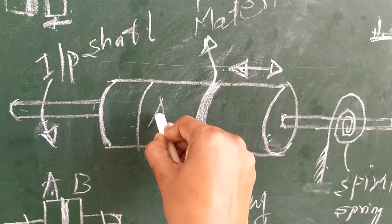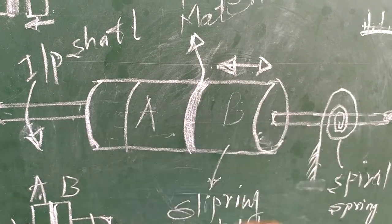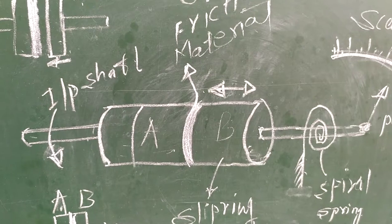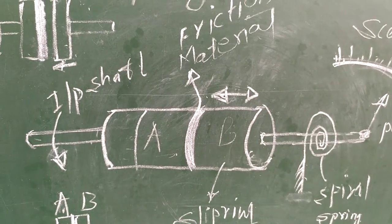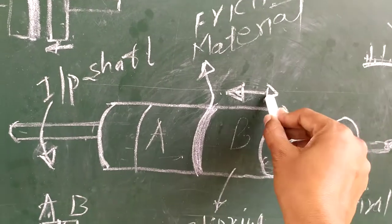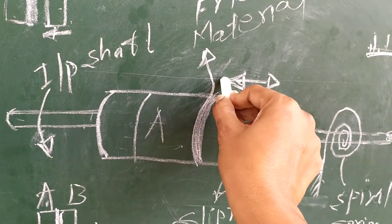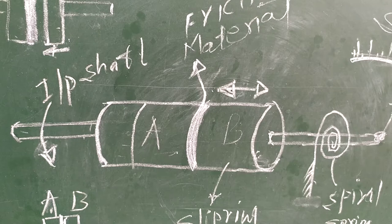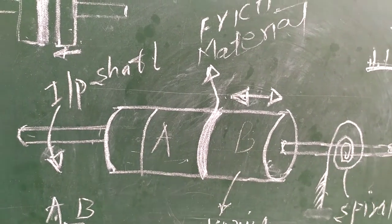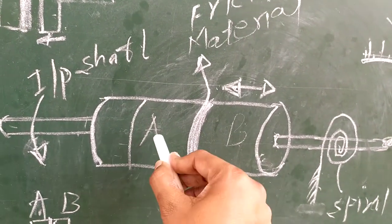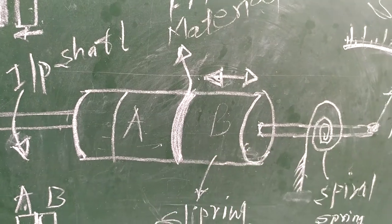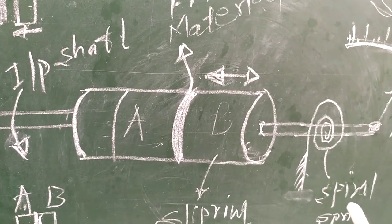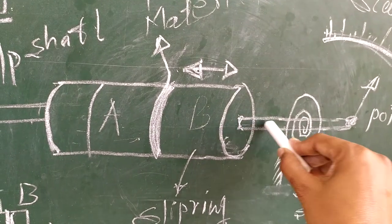This is the A disk and this is the B disk. A disk will be moving initially and B is at stationary. When we move this B disk towards the left hand side, it will gradually engage with the A disk. After a certain time, the position will come that A and B will start rotating at the same speed.